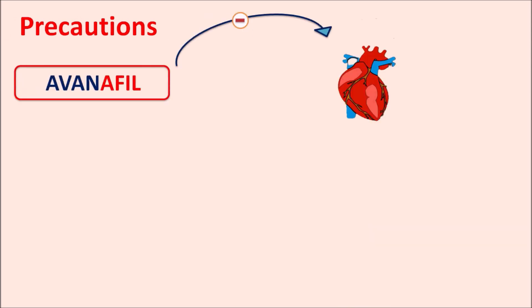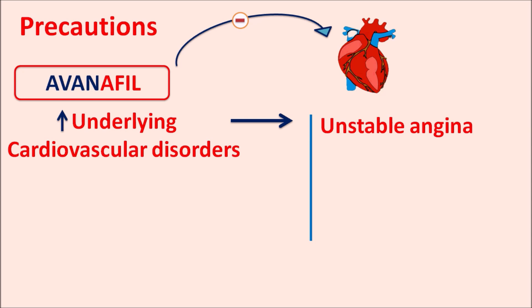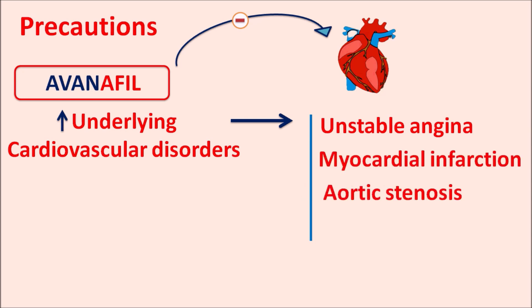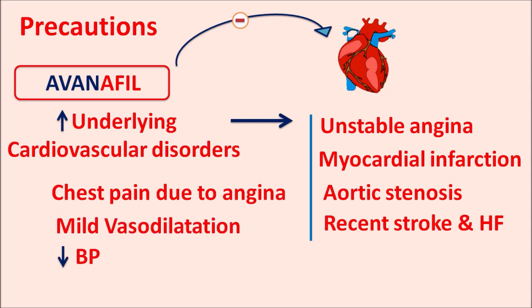What are the precautions? One important precaution of avanafil is on the cardiovascular system. Avanafil can worsen underlying cardiovascular disorders. In patients already having cardiovascular conditions such as unstable angina, myocardial infarction, aortic stenosis, recent strokes, or congestive heart failure, avanafil should be carefully given because it further increases the risk of cardiovascular events. It can increase chest pain due to angina and can also produce vasodilation, which reduces blood pressure.